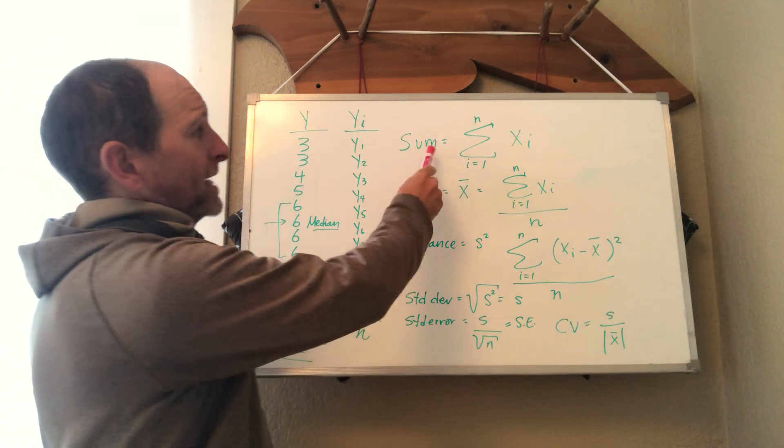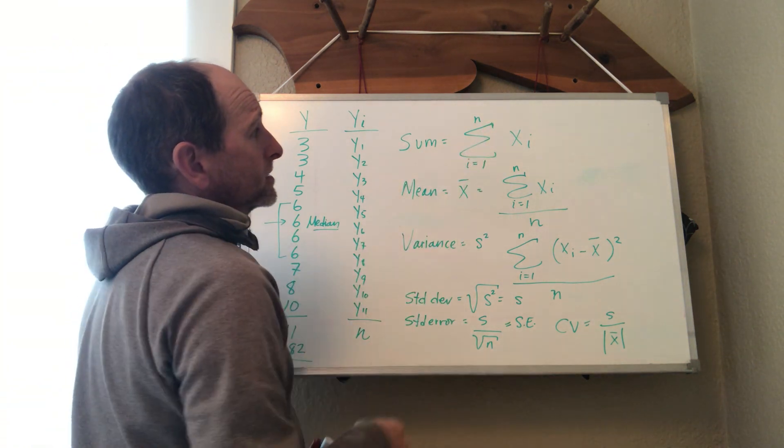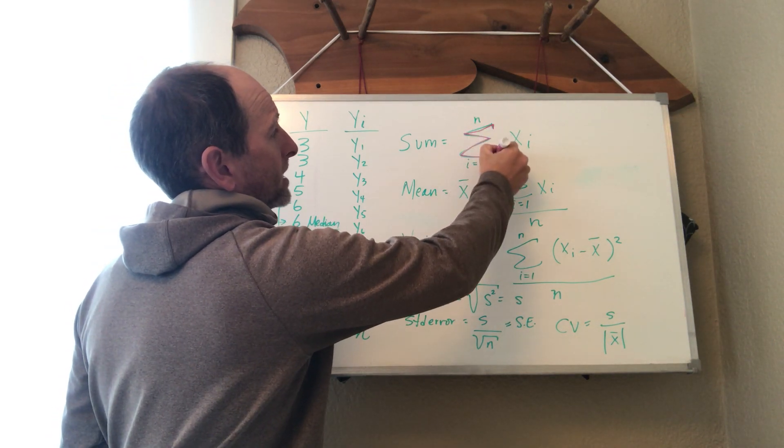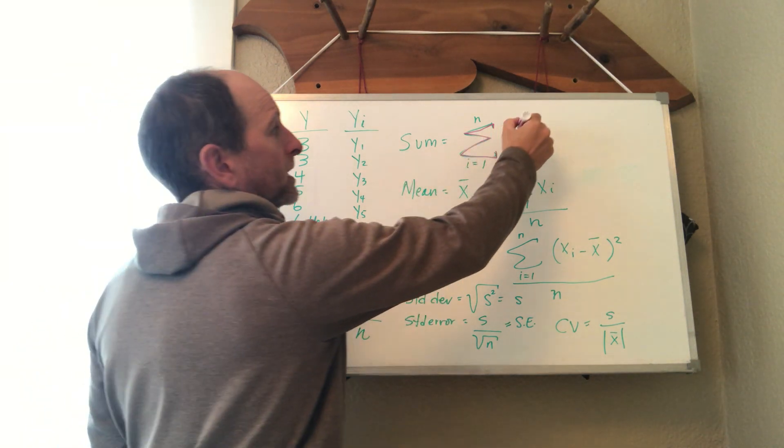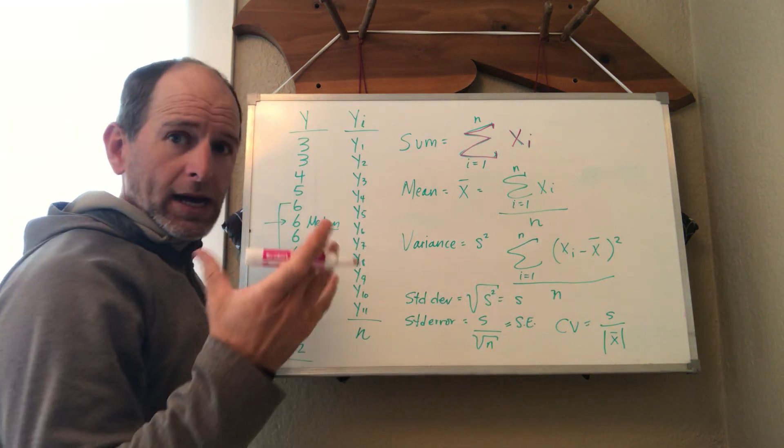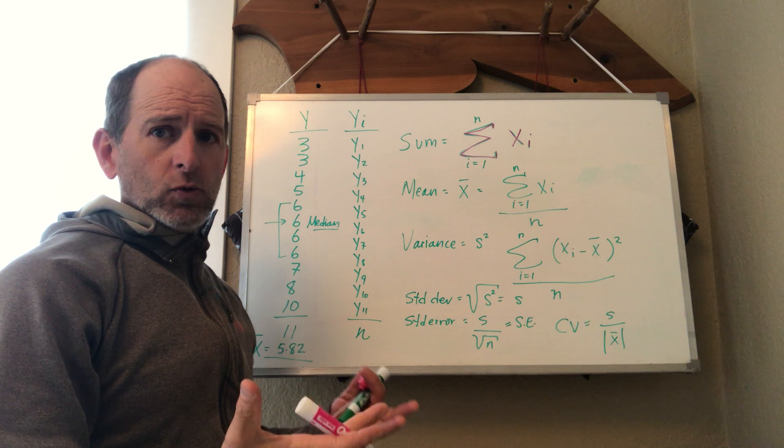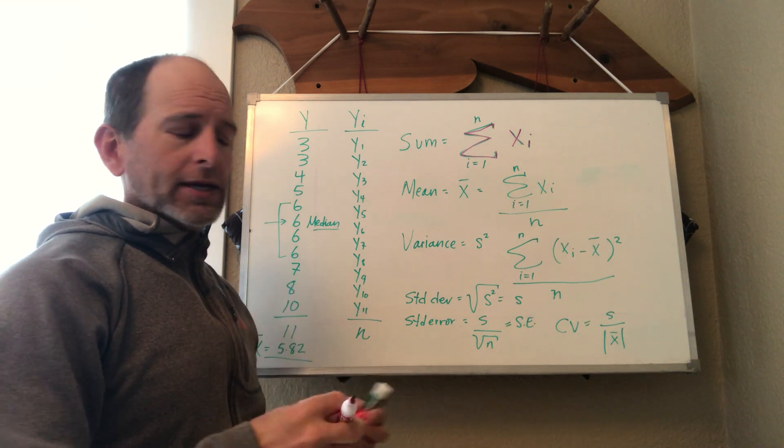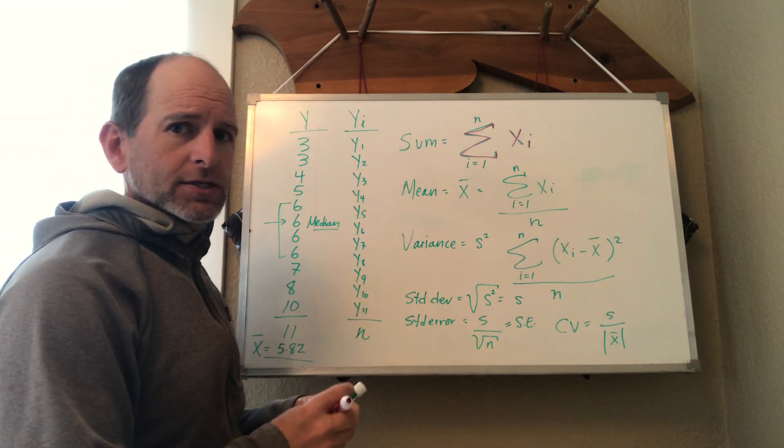So a summation symbol is represented here by this sigma. Sigma is simply saying hey, add up everything that comes after it. In this case, add up all the x sub i's, and we know that i is a subscript just standing for any individual observation. So it could be x sub 1, x sub 2, x sub 3. It's just any individual in a series.